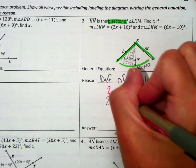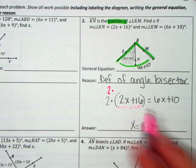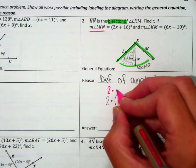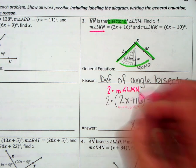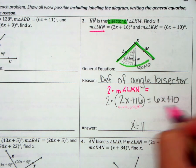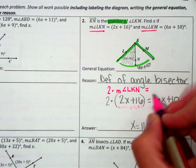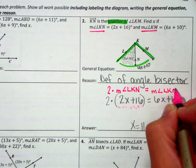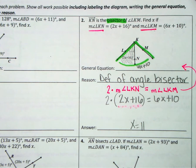So then my general equation would be 2 times—and then what is this? Where did this come from? Which angle did this come from? Well, that came from angle LKN. So I'll switch this out with measure LKN. Then the 6x plus 10, where did that come from? That came from the angle LKM, and that would be your general equation.